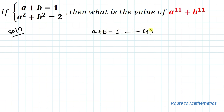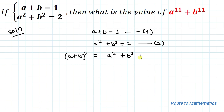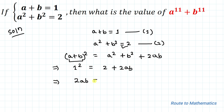Our first equation is a plus b equals 1, and our second equation is a squared plus b squared equals 2. Using the algebraic identity (a plus b) whole squared equals a squared plus b squared plus 2ab, we substitute: 1 squared equals 2 plus 2ab. This gives us 2ab equals minus 1, so ab equals minus 1 by 2. Let's call this equation 3.